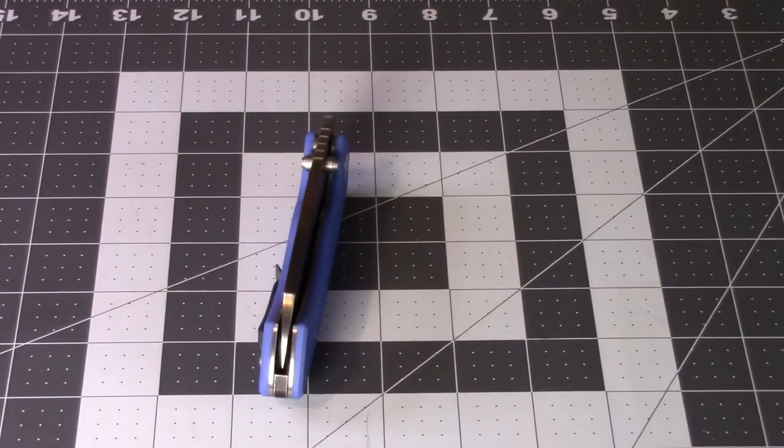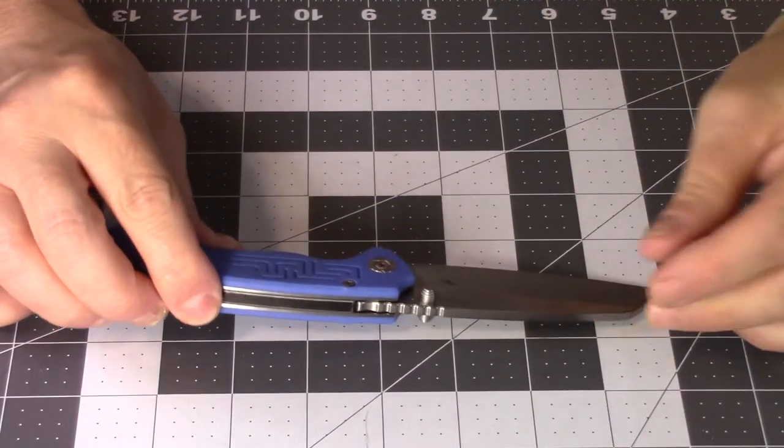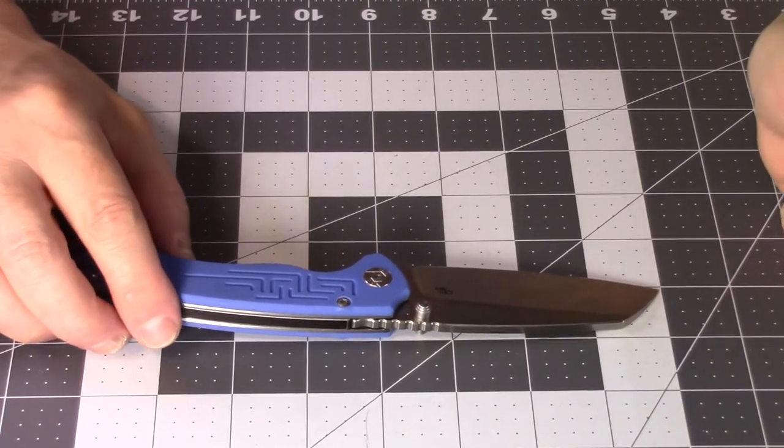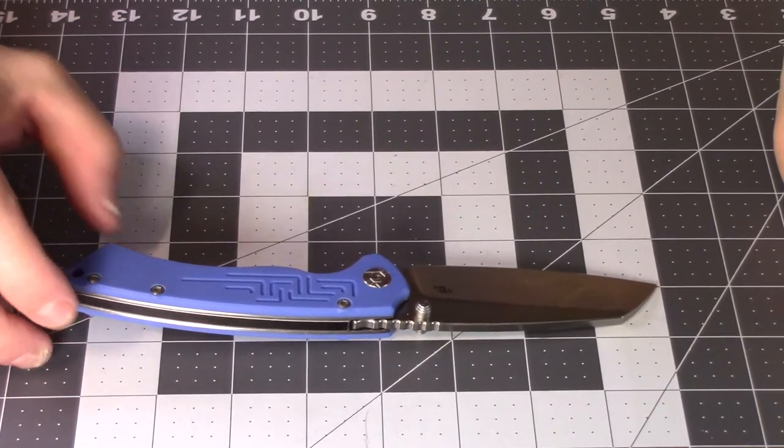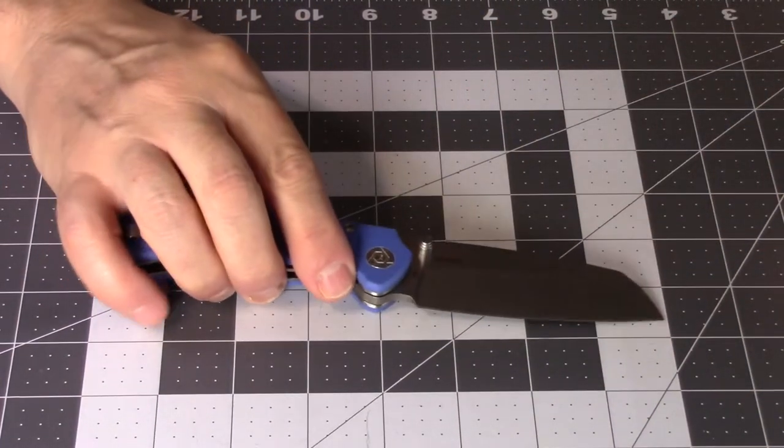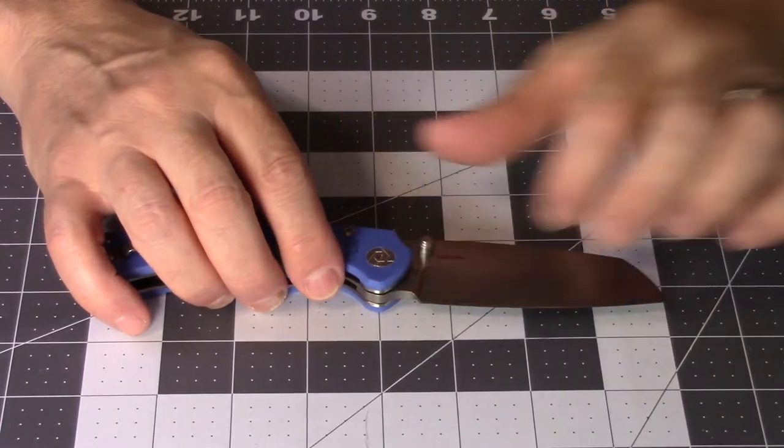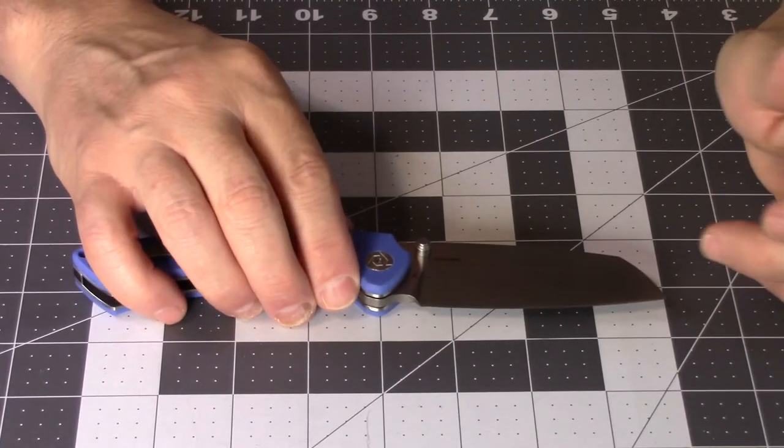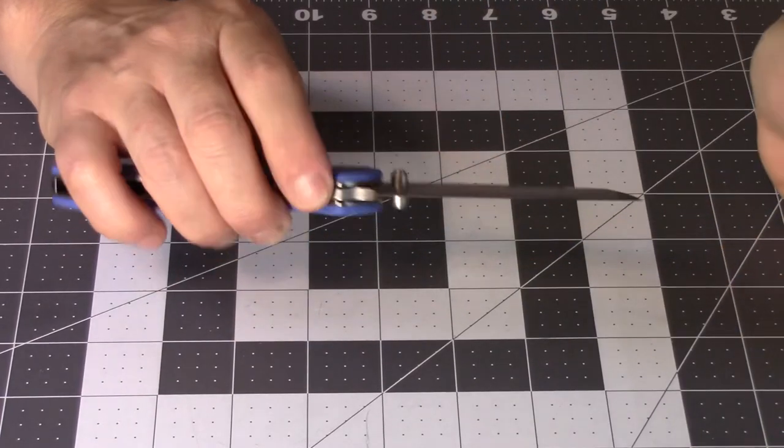I wasn't able to find any stats on it so we'll use the grid here to get a look. We're coming in at just a hair over eight inches, nearly eight and a quarter inches open overall. That blade is a total of about four inches from tip to the base.